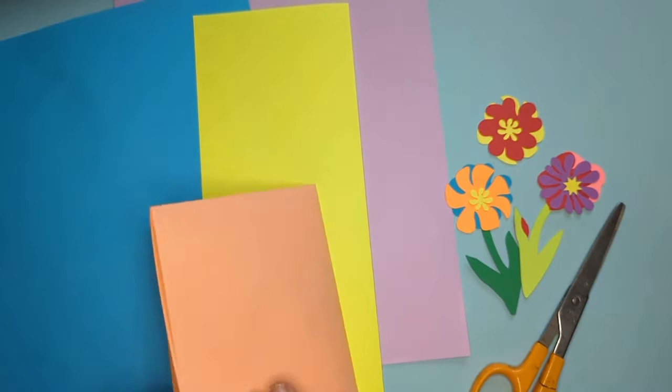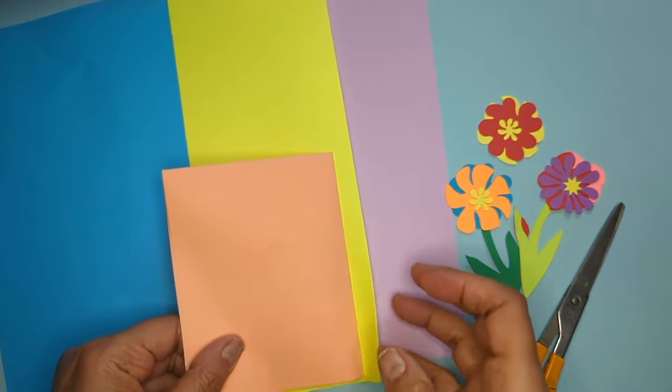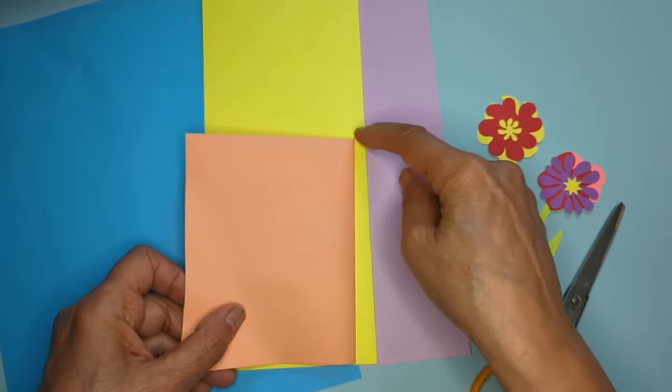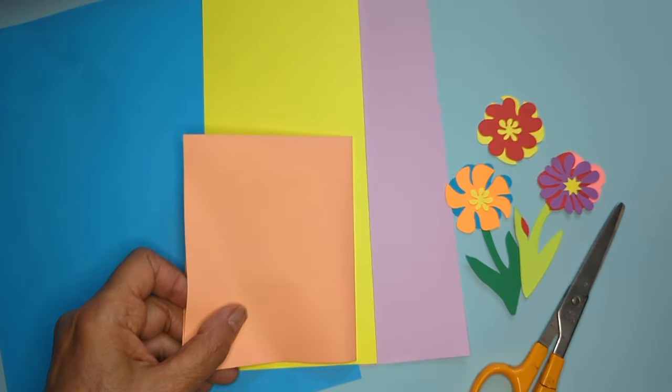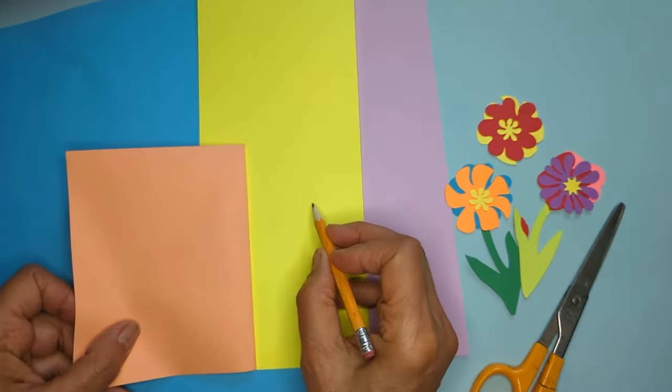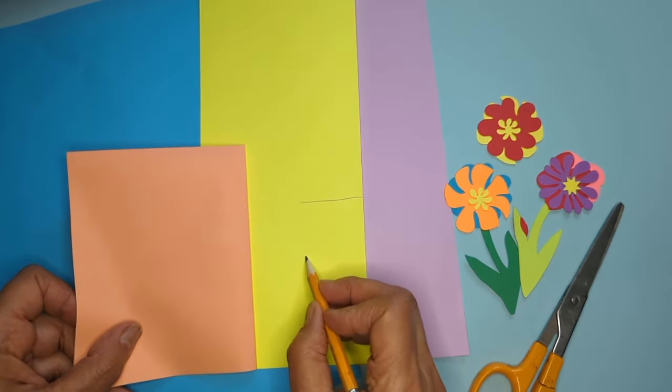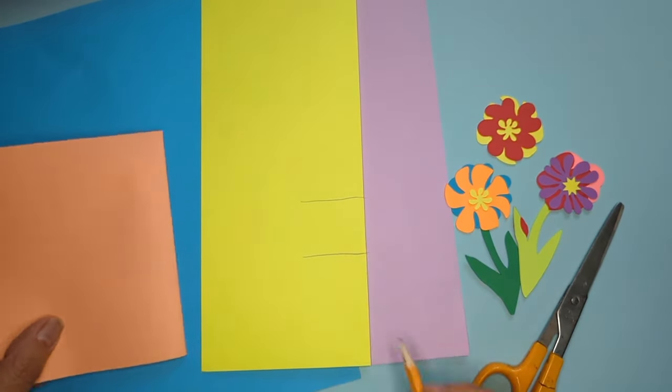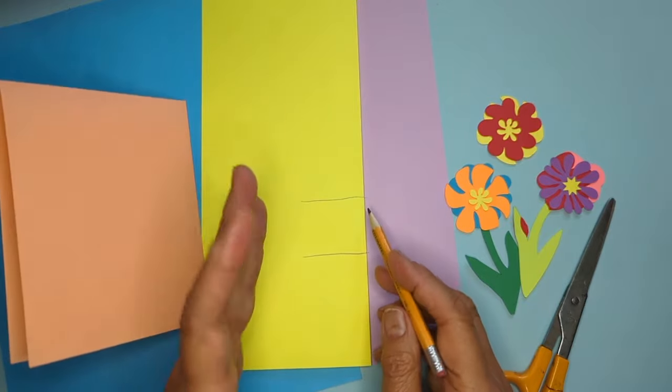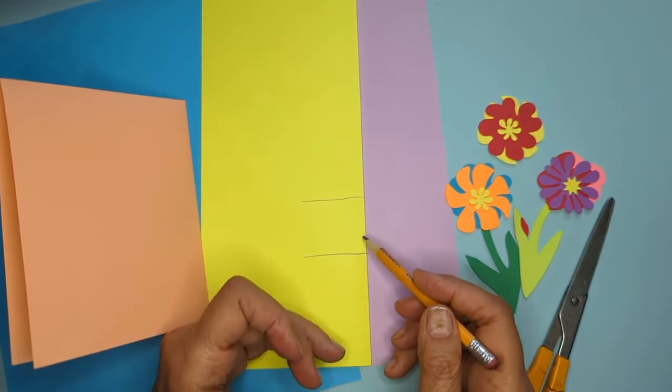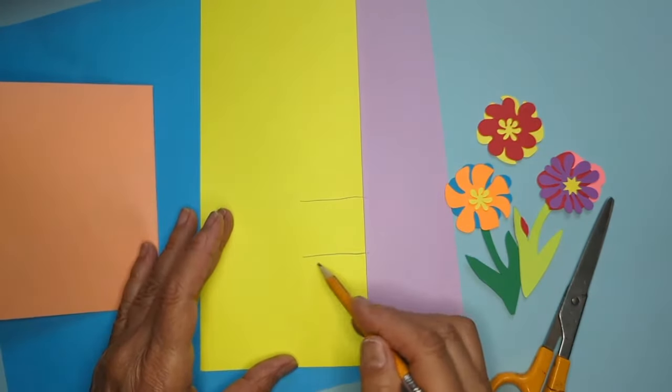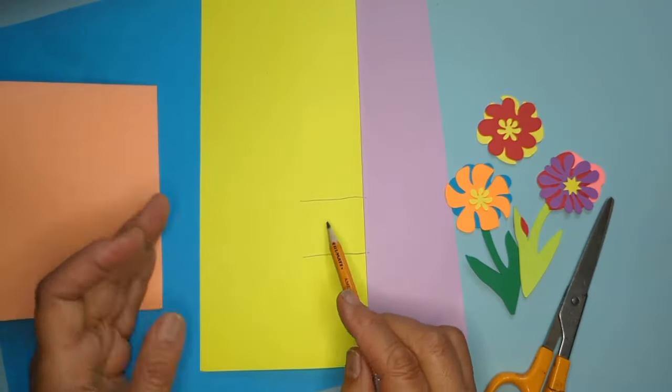Now remember we're only using the lower half of this paper to make the pop-up. So I'm going to cut two lines. I think of this as like an 11. It can be big, it can be little, up, down a little bit lower, but just start off with something that looks like an 11.